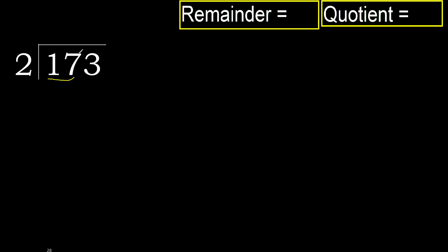With 17: 2 multiplied by which number is nearest to 17 but not greater? 2 multiplied by 9 is 18 — 18 is greater. Multiply by 8: 16 is not greater. OK, 17 minus 16 is 1.